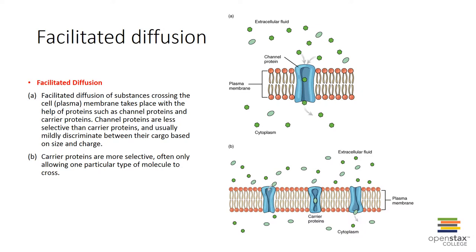Facilitated diffusion, also known as carrier-mediated transport, is where a protein carrier specific for one chemical allows the binding of a substrate, which causes a change in the shape of the transport protein, allowing the substance to cross. Certain lipophobic molecules like amino acids might use a carrier or channel. These exhibit specificity — they are very selective for what can pass. They are also saturable: the rate is determined by the number of carriers or channels. The binding of the substrate causes a conformational change in the carrier, allowing it to cross the membrane.